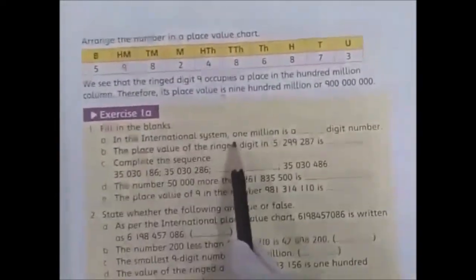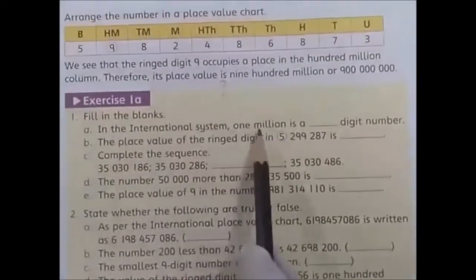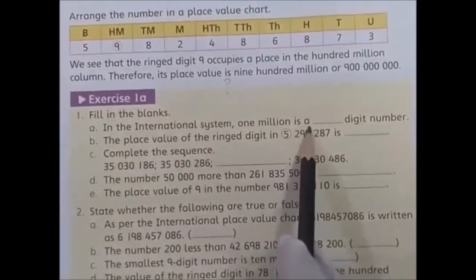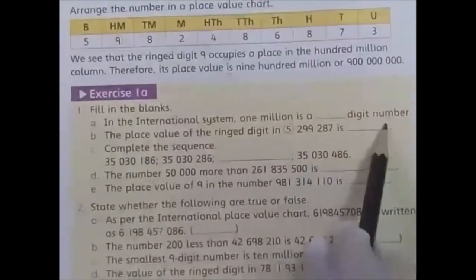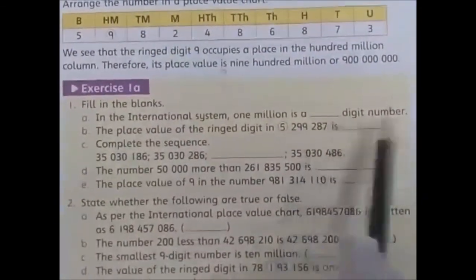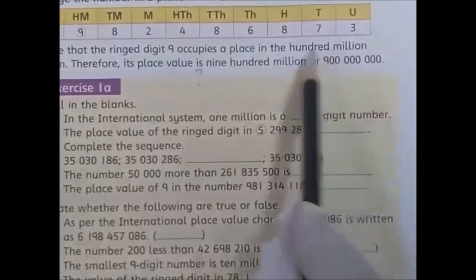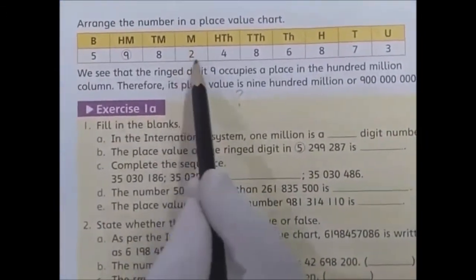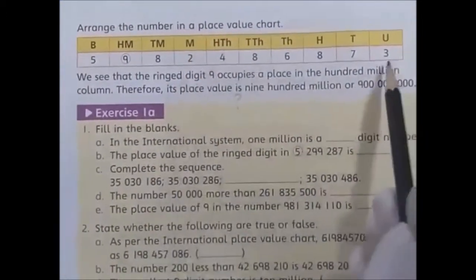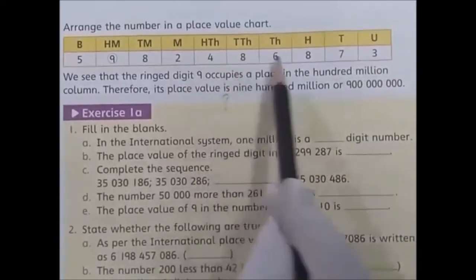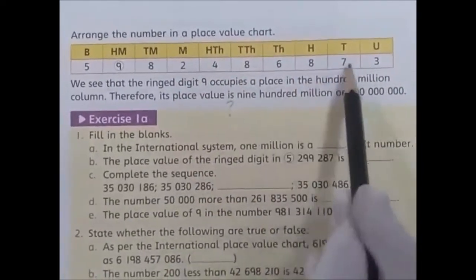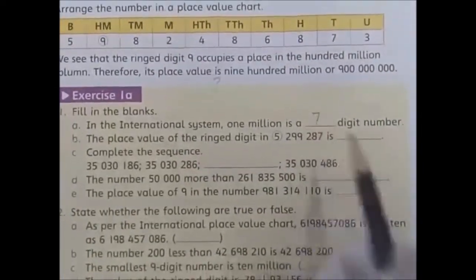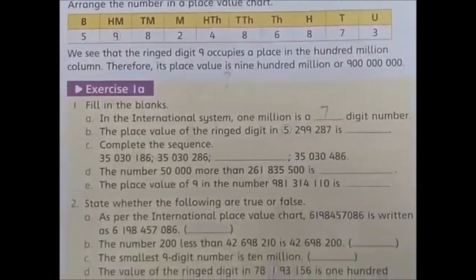In the international system, one million is a dash-digit number. Look at the place value chart — one million. How many digits? One, two, three, four, five, six, seven. It is a seven-digit number.